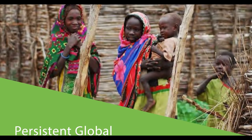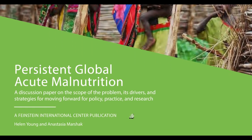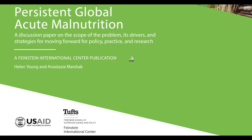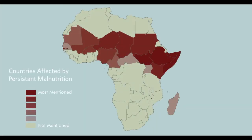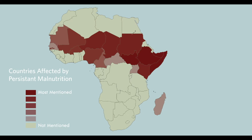As part of a study by Tufts University on this issue, we interviewed 25 nutrition professionals and other technical specialists. All of them identified regions they knew to be affected by persistently high rates of acute malnutrition. In Africa, many of these regions were in the Sahel and East Africa, and this map highlights the countries that were identified most often by our interviewees.